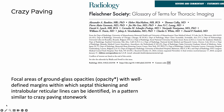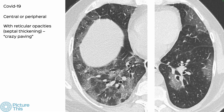Crazy paving is defined by the Fleischner Society as focal areas of ground glass opacities with well-defined margins, within which you have septal thickening and intralobular reticular lines — similar to crazy paving stonework. We saw this a lot during COVID with areas of organizing pneumonia where you have ground glass with septal thickening and lines within. But that would be considered focal or multifocal; there is also an entity called diffuse crazy paving.